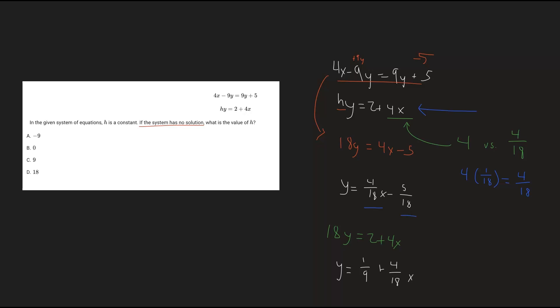And so now we have our two equations. We have this equation and this equation. We can clearly see that they have the same slope of 4 over 18, but they have different y-intercepts as we wanted before. So this one has a y-intercept of negative 5 over 18. This one has a positive y-intercept of 1/9.